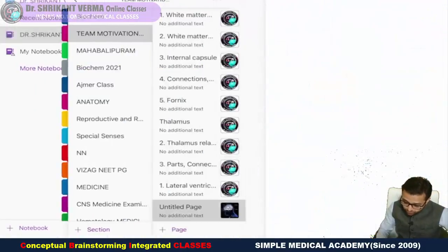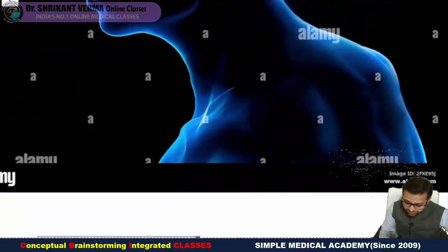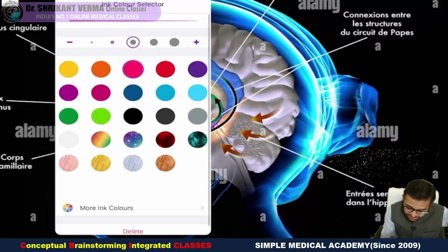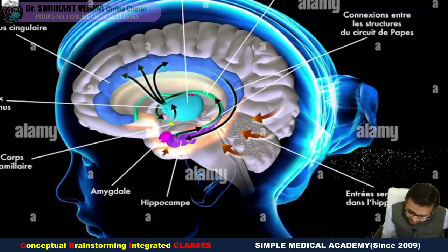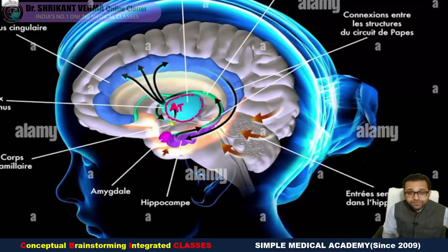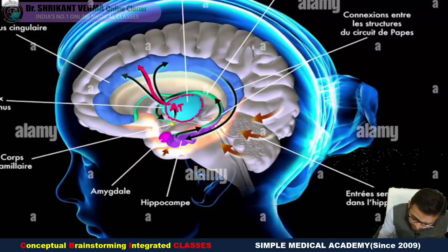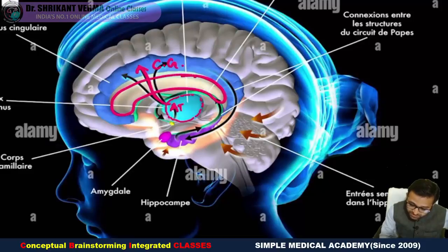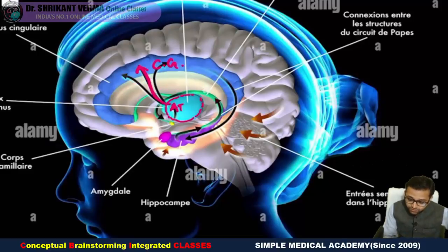Now superimpose all the pathways — we already studied these. We are just looking for that portion inside the brain. So this is our thalamus. From the anterior nucleus of the thalamus, the impulses are reaching to the cingulate gyrus. The cingulate gyrus is located just above our corpus callosum. Impulses are reaching to the cingulate gyrus, which is the pleasure zone.